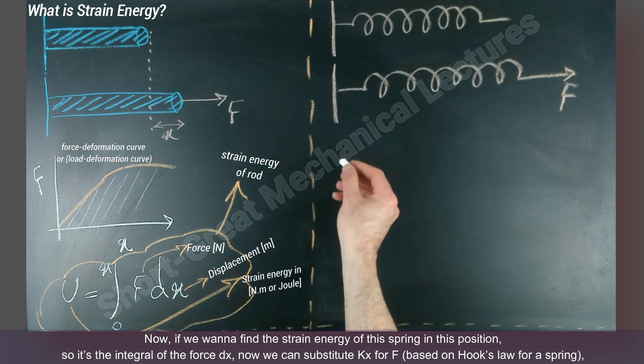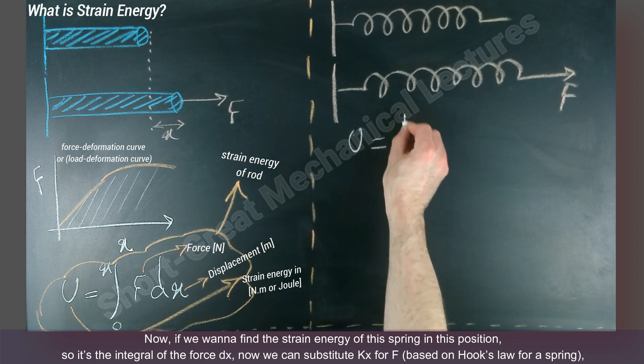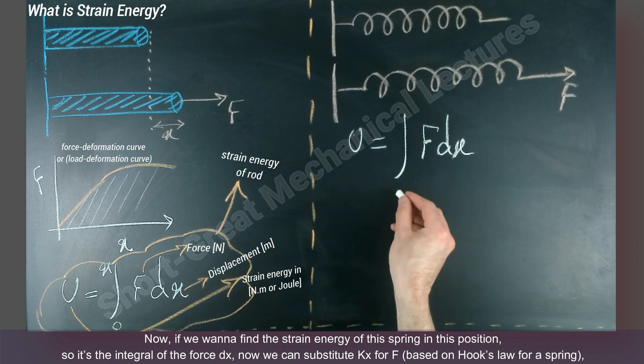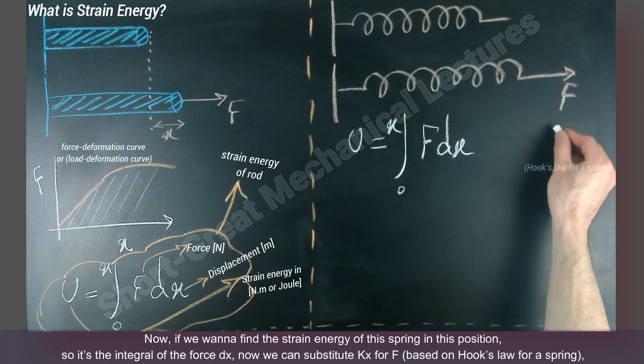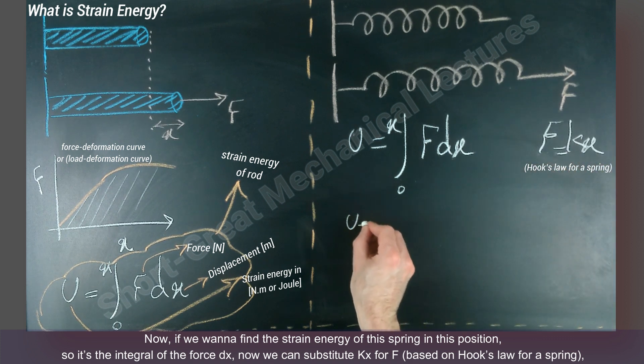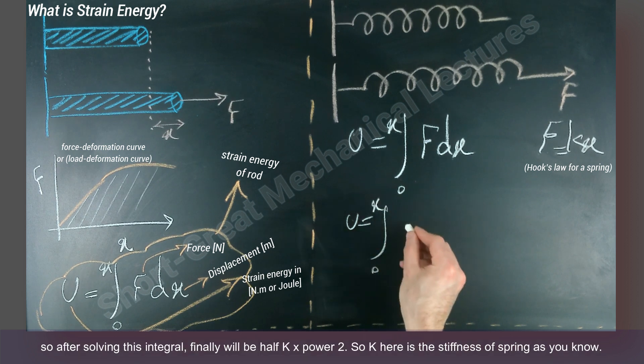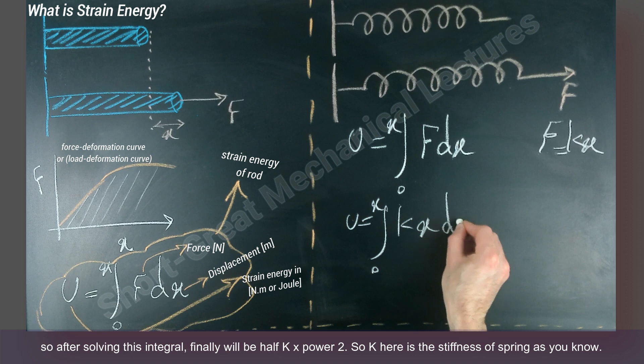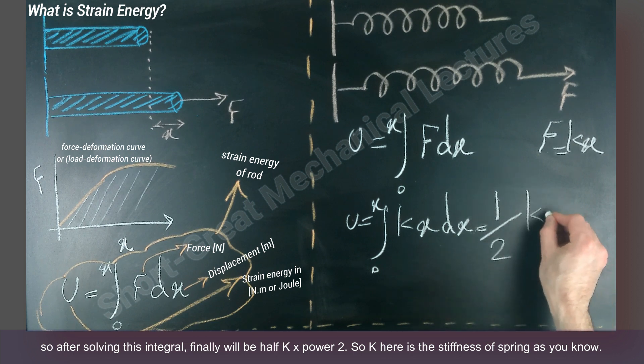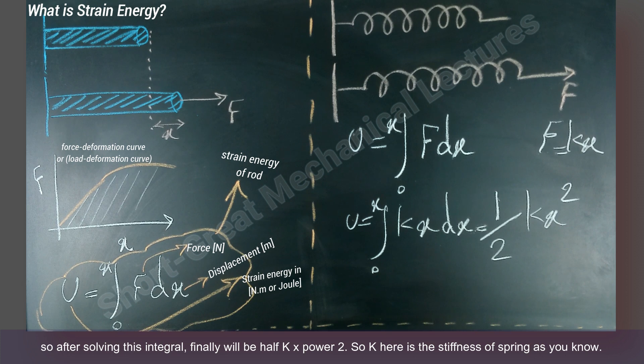So it's the integral of the force dx. Now we can substitute kx for F based on Hooke's law for a spring. So after solving this integral, finally will be half k x power two. All right, k here is the stiffness of spring as you know.